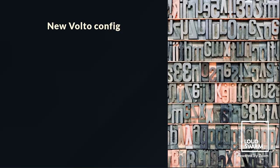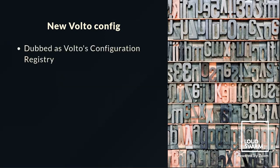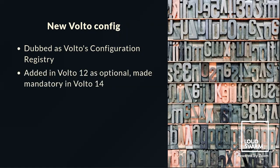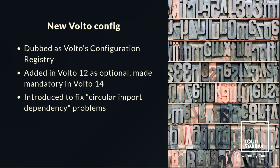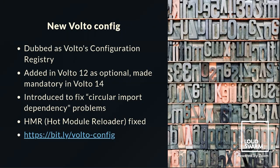Starting with Volto 10 and upwards to almost Volto 14, the first new feature is the new Volto Config, dubbed the Volto Configuration Registry. In essence, it is a centralized singleton populated from the core config module. It was added in Volto 12 as optional but made mandatory in Volto 14. It was introduced to fix circular import dependency problems from the old system, and as a good side effect, hot loading is working again.